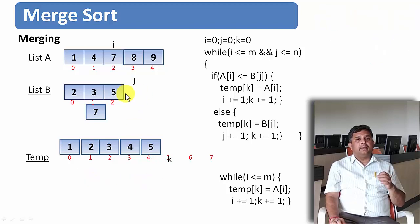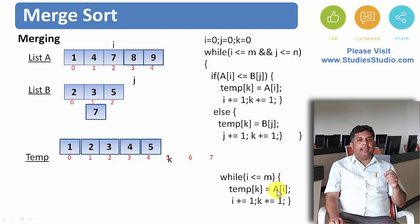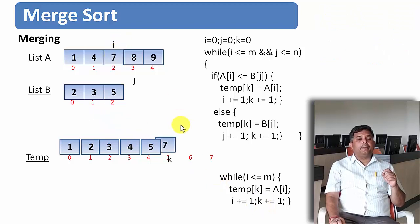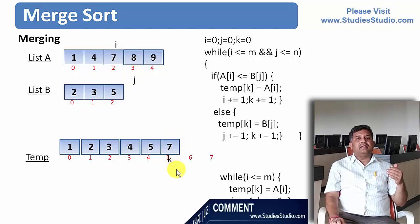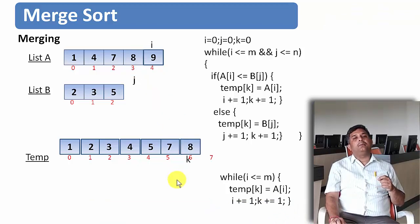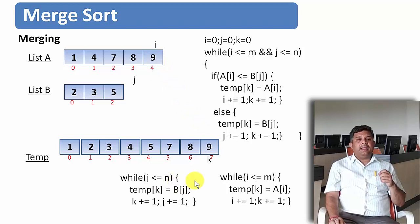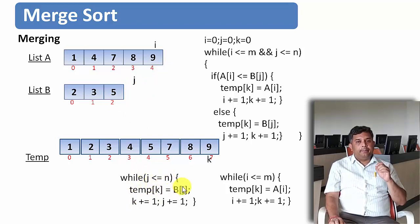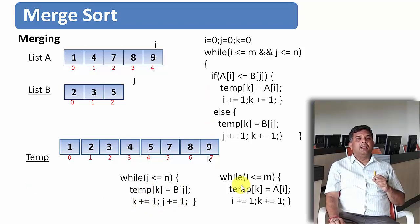Now there is no more data in B, so we apply the remaining part of the algorithm: while i ≤ m, copy all data from A to temp. So we copy 7, increment i and k; copy 8, increment i and k; copy 9, increment i and k. Similarly, if i had been exhausted first and data remained in B, we apply while j < n, copying B[j] to temp and incrementing k and j. Combining all three parts, the merging is complete.